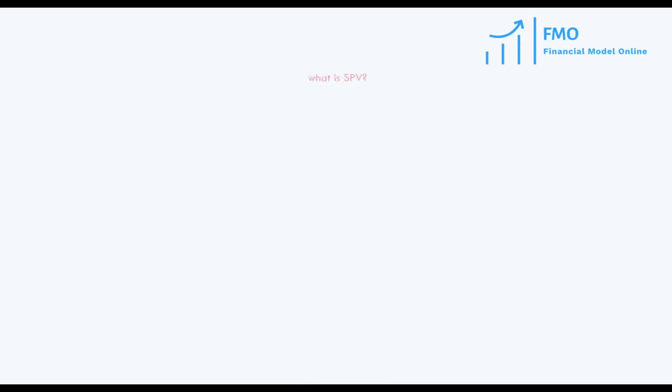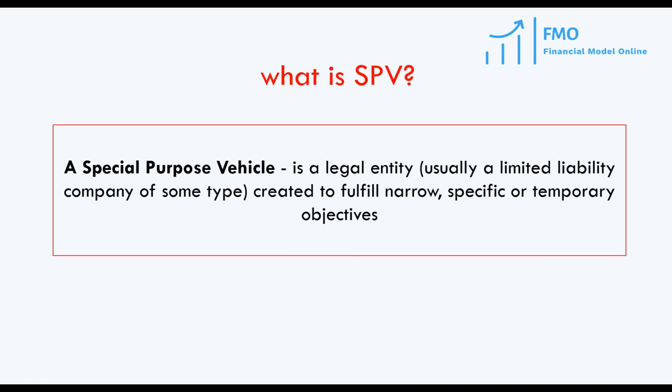So, what is a special-purpose vehicle? A special-purpose vehicle is a legal entity — a limited liability company — created to fulfill a narrow and specific objective.